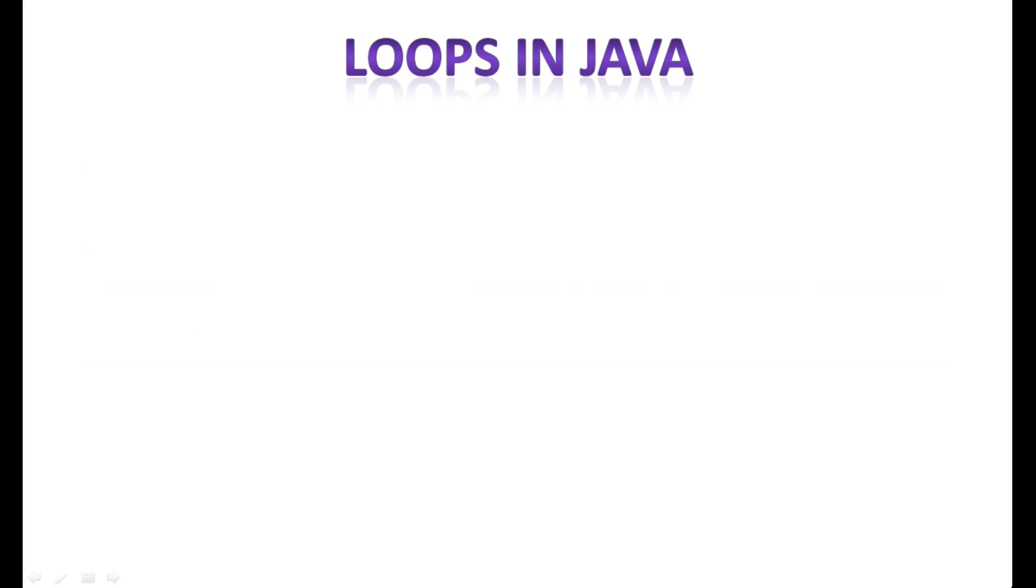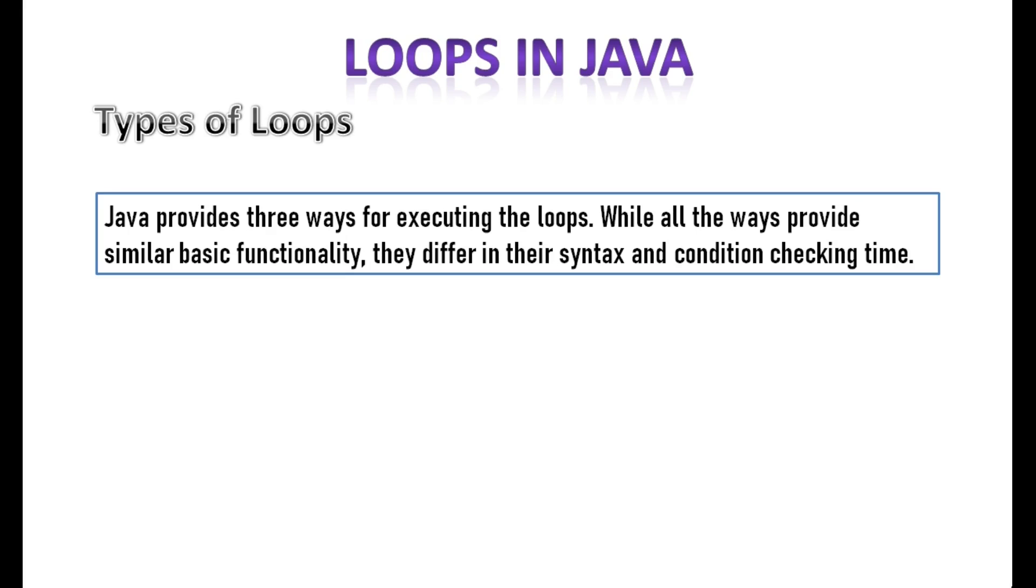Now coming to the types of loops. Java provides three ways for executing the loops. While all the ways provide similar basic functionality, they differ in their syntax and condition checking time. For loop, while loop, do while loop. This tutorial focuses on the for loop. You will learn about the other type of loops in the upcoming tutorials.